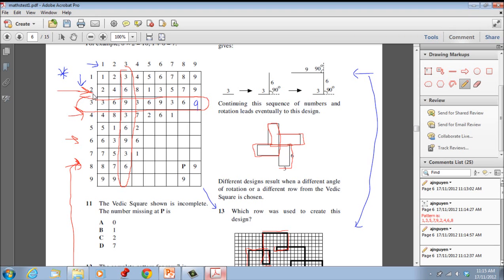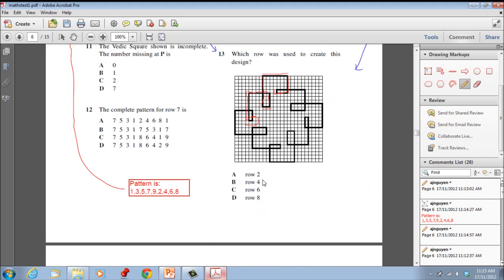It's obviously row 2. Row 2 is 2, 4, 6, 8. It starts at 2. However, when it's 2 times 5, this section here, it actually starts at 1. So 1, 3, 5, 7, 9, 2, 4, 6, 8. And then it repeats itself again at 1, 3, 5, 7, 9, 2, 4, 6, 8. Therefore, the correct answer here is row 2.